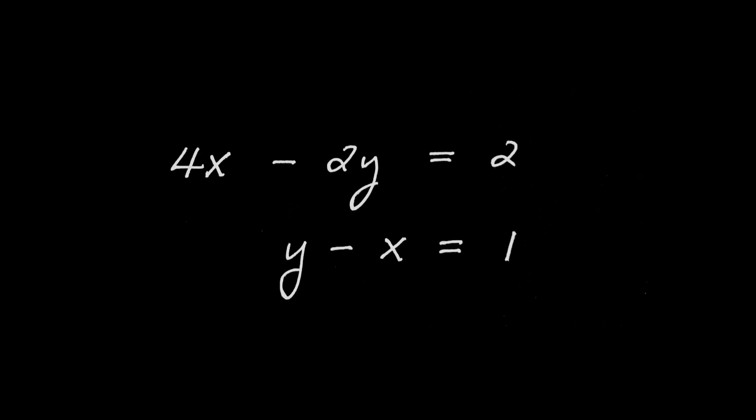I started with two equations relating x and y, and using linear system solution skills from math class, I found x equals 2 and y equals 3. I can verify: 4 times 2 is 8, minus 2 times 3 which is 6, gives 8 minus 6 equals 2 — that checks out. The second equation: 3 minus 2 equals 1 — also checks out. So x equals 2 and y equals 3 are the solutions.